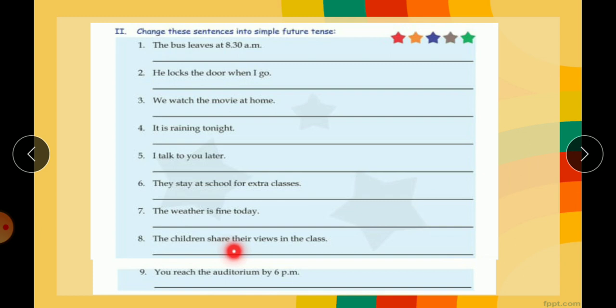The children share their views in the class. The children will share. Share is a verb, so will share their views in the class. You reach the auditorium by 6 pm. Reach is a verb, already in the first form, just put will. You will reach the auditorium by 6 pm. So find the verb, change them into the root form and put will and shall accordingly.